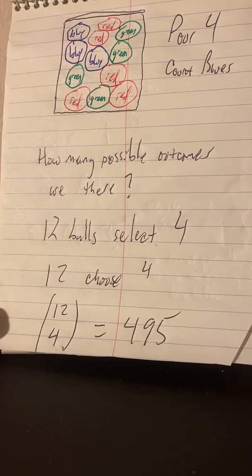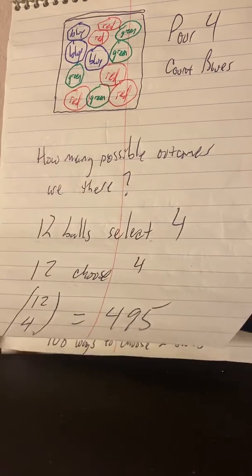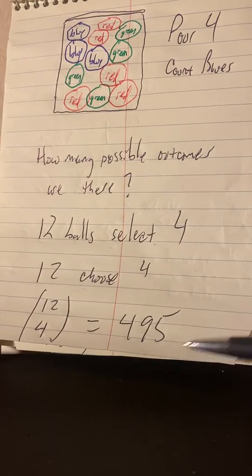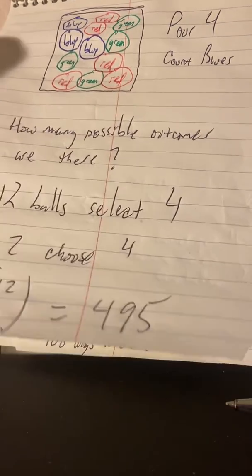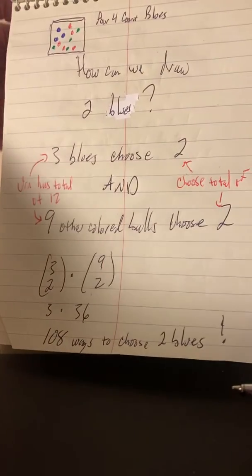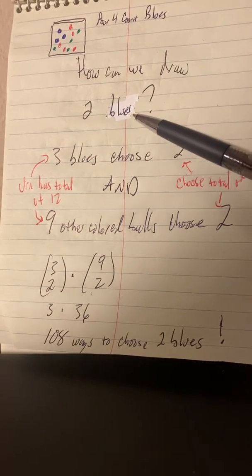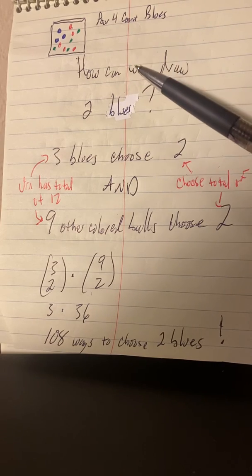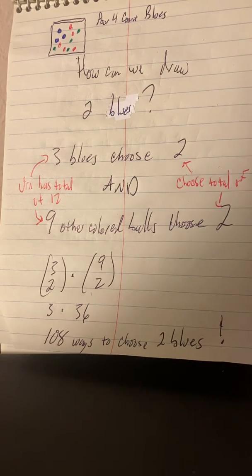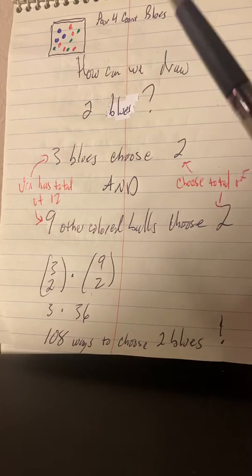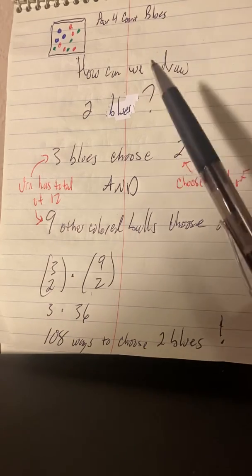Now, I don't want to build a symmetric sample space and neither do you that's got 495 spaces in it. So we'll think about this differently. Let's consider the case of drawing two blues. That's one of the things that could happen. Remember, our sample space was zero, one, two, or three. So let's do two.